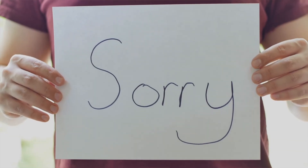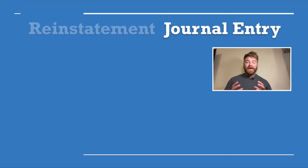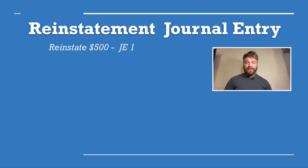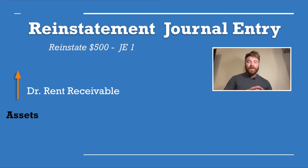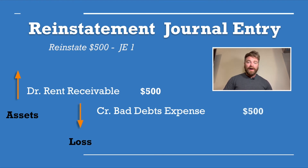Now let's fast forward and say that in a couple days the renter actually comes back, apologizes, and offers to pay just the remaining $500 for that month. In accounting, we call this a reinstatement — we must reinstate the books for the cash to be collected. To reinstate the receivable balance, we debit rent receivable, reinstating it and adding the rent receivable back to the books for $500. Then we credit the bad debt expense loss to show that we're removing that loss from the books for $500 as well.